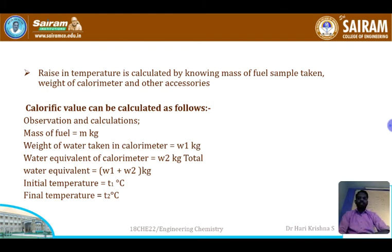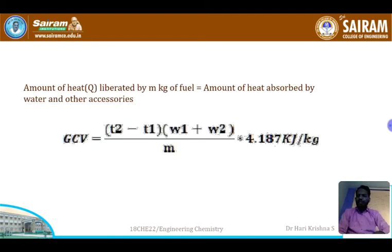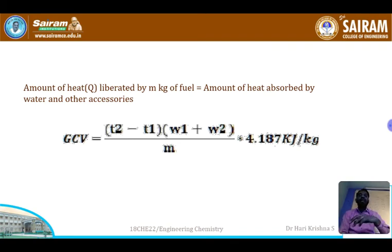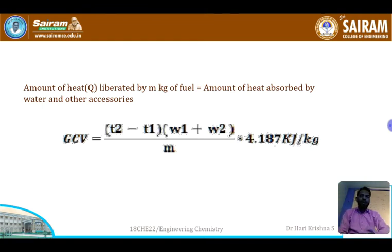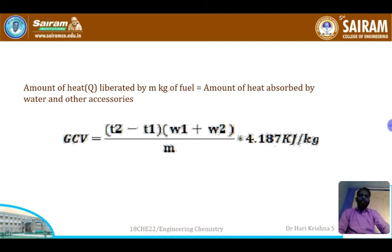The heat liberated by the fuel is absorbed by the water and accessories in the calorimeter. Therefore, Q = (T2 − T1). The gross calorific value is given by: GCV = [(T2 − T1) × (w1 + w2) / m] × 4.187 kJ/kg. The factor 4.187 is the conversion factor from calories to kilojoules per kg.